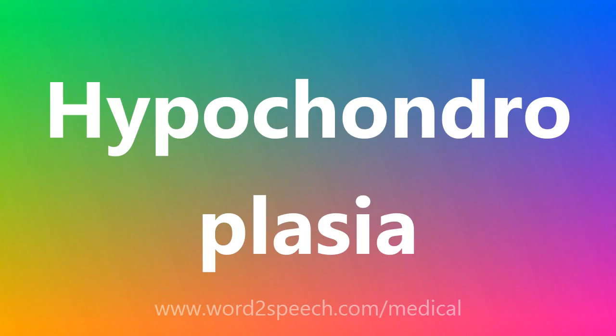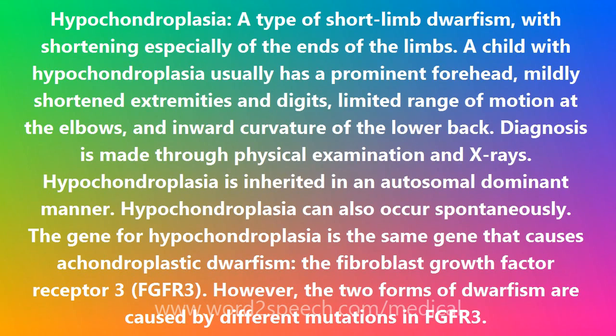Hypochondroplasia, a type of short-limb dwarfism, with shortening especially of the ends of the limbs.